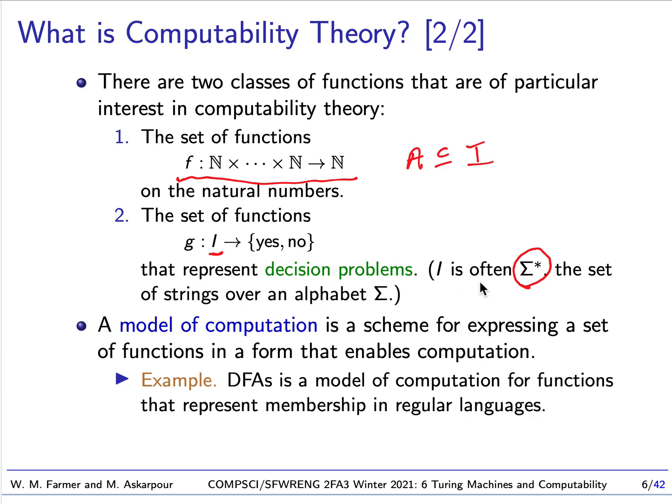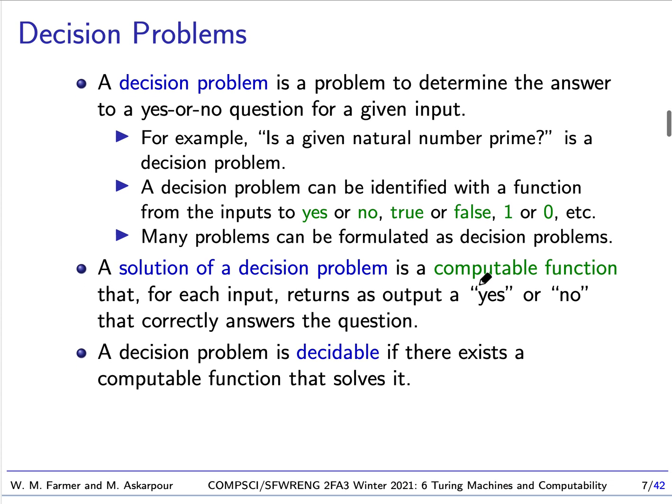A decision problem is a problem to determine the answer to a yes-or-no question for a given input. For instance: is a given natural number prime? This is a decision problem — for a particular natural number, we would like to decide whether it is prime or not. A decision problem can be identified with a function that takes inputs and returns yes, no, true, false, or one or zero. A solution of a decision problem is a computable function that for each input returns an output that correctly answers the question. A decision problem is decidable if there is a computable function that solves it.